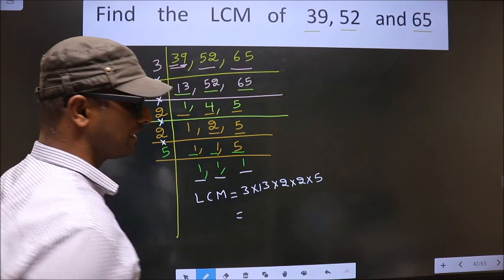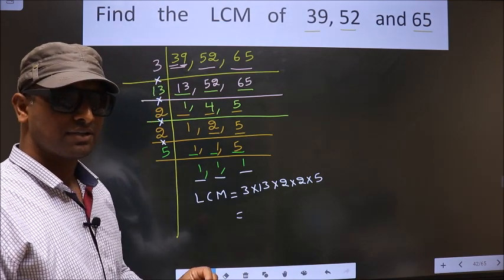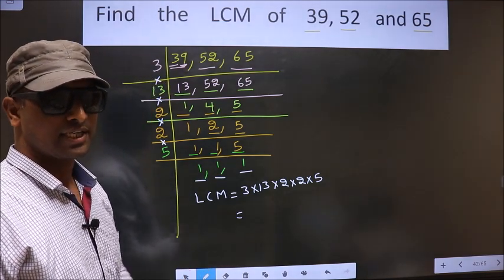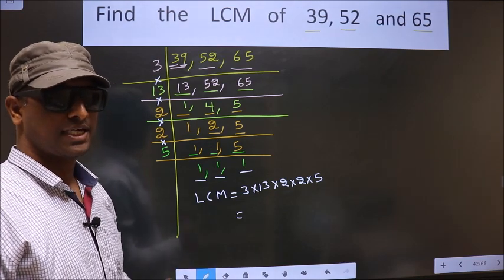You multiply all these numbers. Whatever number you get, that is your LCM. Okay, so let us multiply.